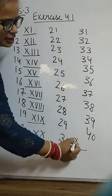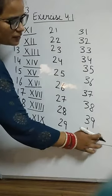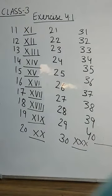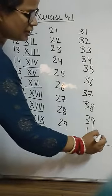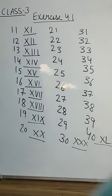30, 3 times X. And what do you mean by 40? 40, we can't write X 4 times. So that will be XL. That is the bigger number will appear on the right side. Okay?